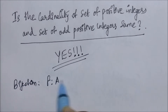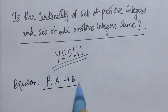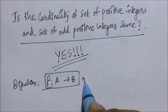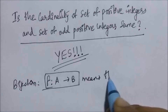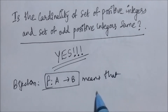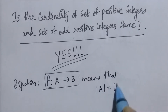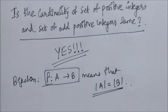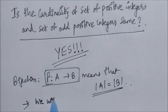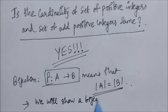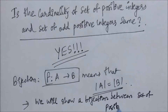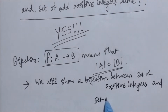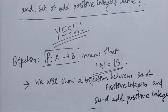Remember a bijection. A bijection is a function from a set A to set B that is both one-to-one and onto. We know that when a bijection exists from a set A to set B, it means that the cardinality of A is the same as the cardinality of B. Now that's what we are going to show — that there exists a bijection between the set of positive integers and the set of odd positive integers.